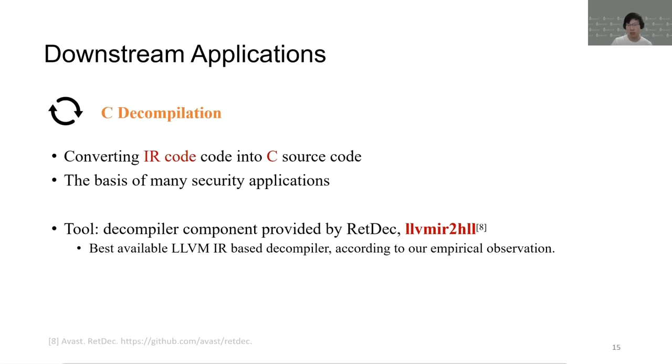CT compiler conducts a static analysis process to the IR code and converts IR code into high-level C source code. For this task, we use the decompiler component provided by the RAT-DAC framework, which is the best-available LLVM-IR-based C decompiler, according to our empirical observation.